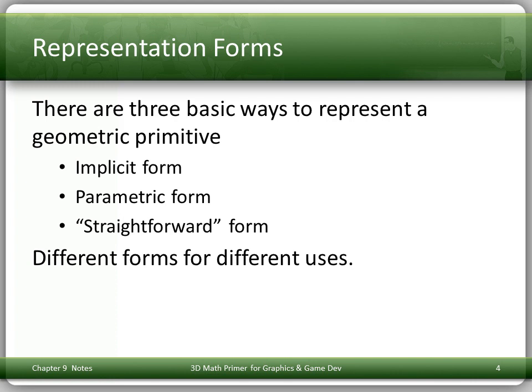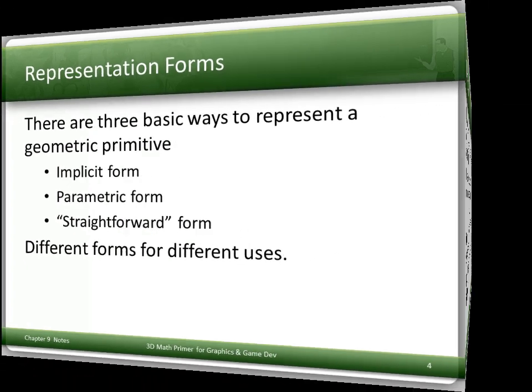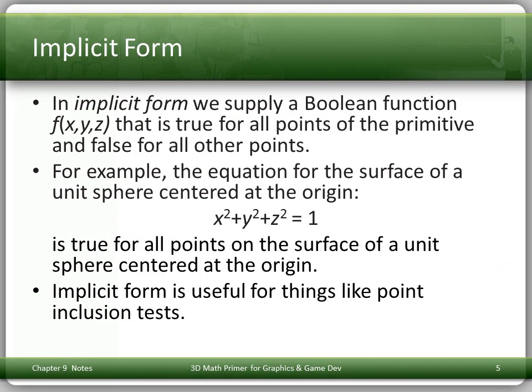Now there are three basic ways to represent a geometric primitive, and they all have their uses. There's implicit form, there's parametric form, and then there's straightforward form. We couldn't find a better name for straightforward — it's what people use. We'll start off looking at implicit form.